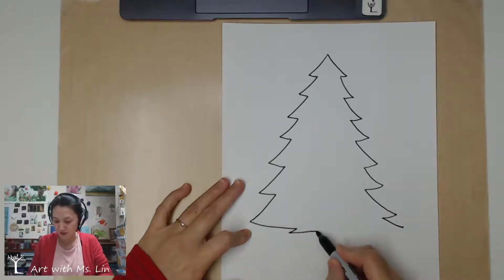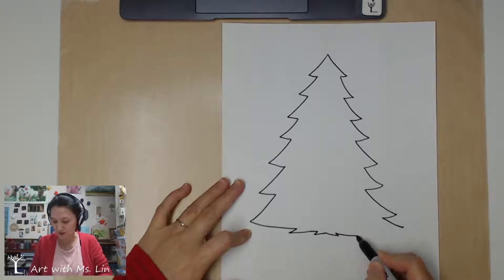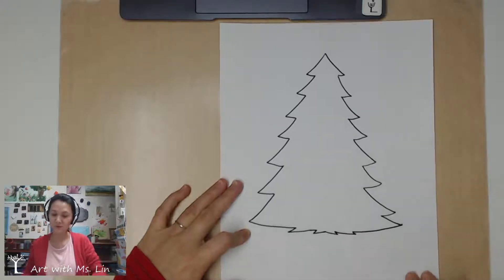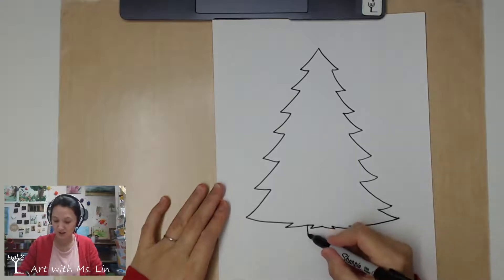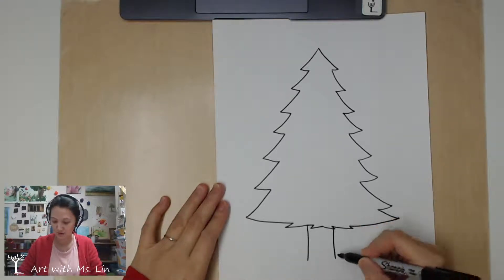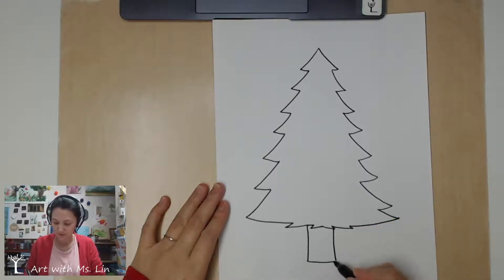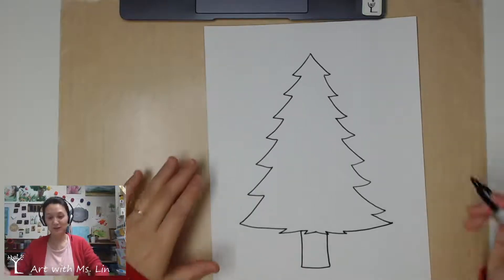And then in the middle, if you want to add a little bit center zigzag. So, we have a tree. Then I'm going to add the tree trunk. Alright, so here's the basic shape.